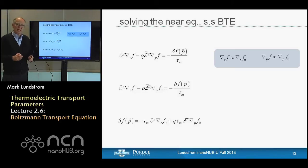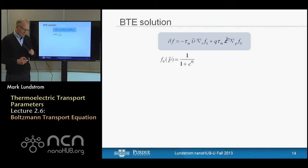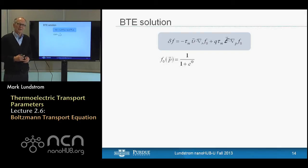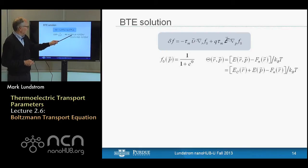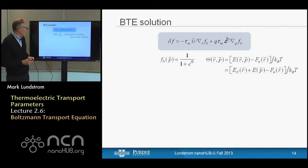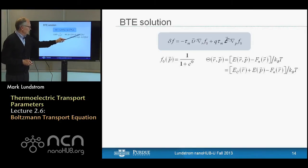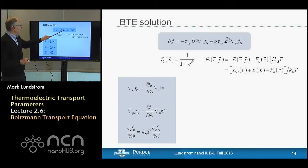One of the important conditions for this approximation is near-equilibrium conditions, which are exactly the conditions we've been concerned about throughout this week. Basically, this assumption says that if you perturb the system, it will decay back to equilibrium exponentially as e to the minus t over tau_m — a very physically motivated assumption. Now we can proceed to solving the Boltzmann equation using the relaxation time approximation and neglecting magnetic fields for now.